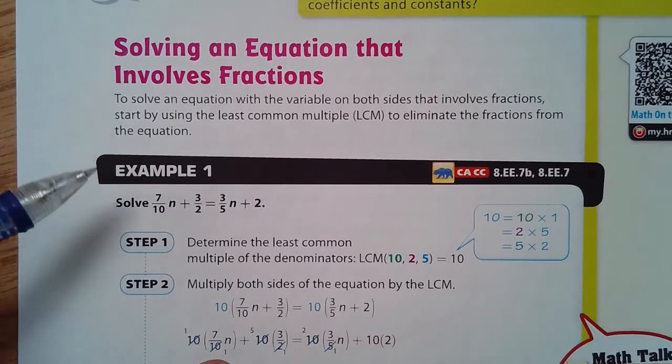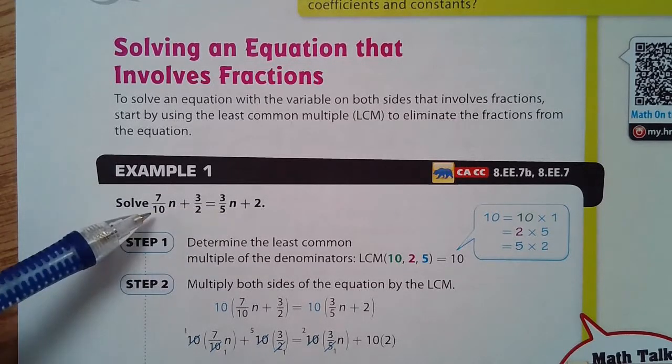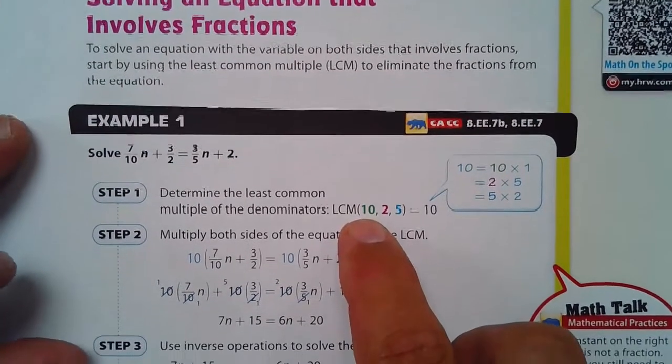Okay, so as we look at 10, 2, and 5, our least common multiple is 10.